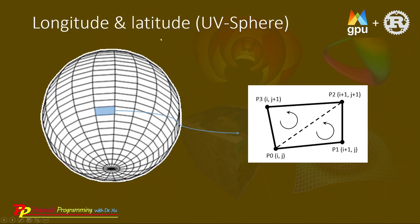We can start with a longitude and latitude method, also called a UV sphere. The sphere can be constructed using U and V rings here. You can see the UV lines form a grid on the surface of the sphere. To generate vertex position data for this surface, it is enough to consider just one unit grid, as shown here.